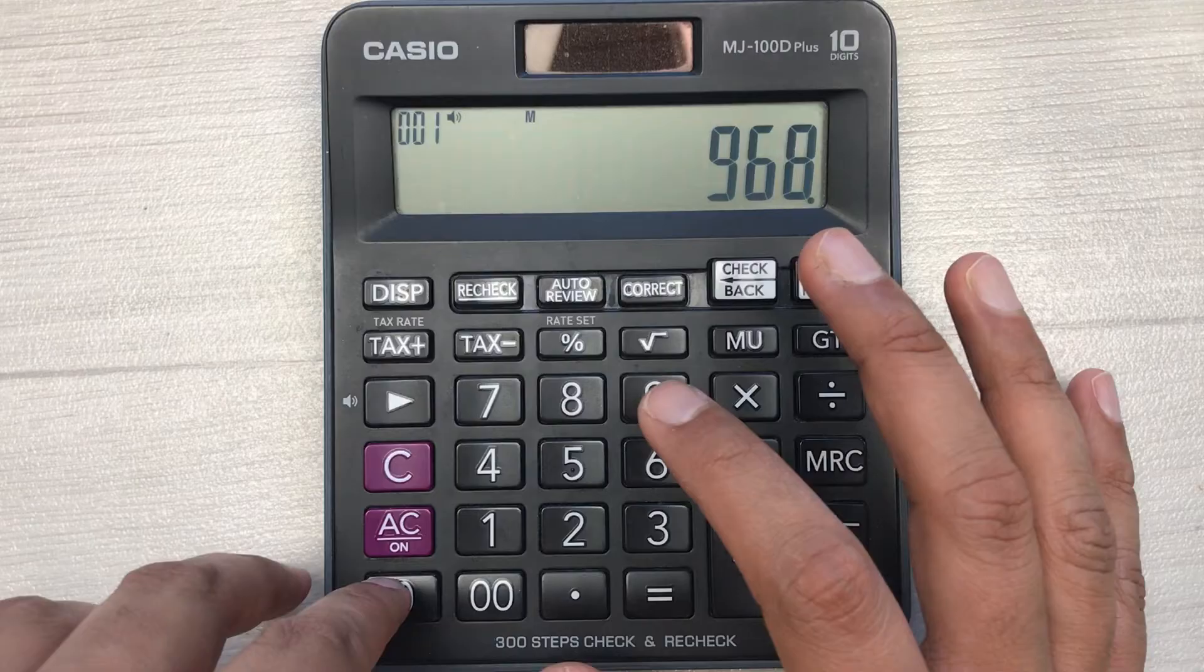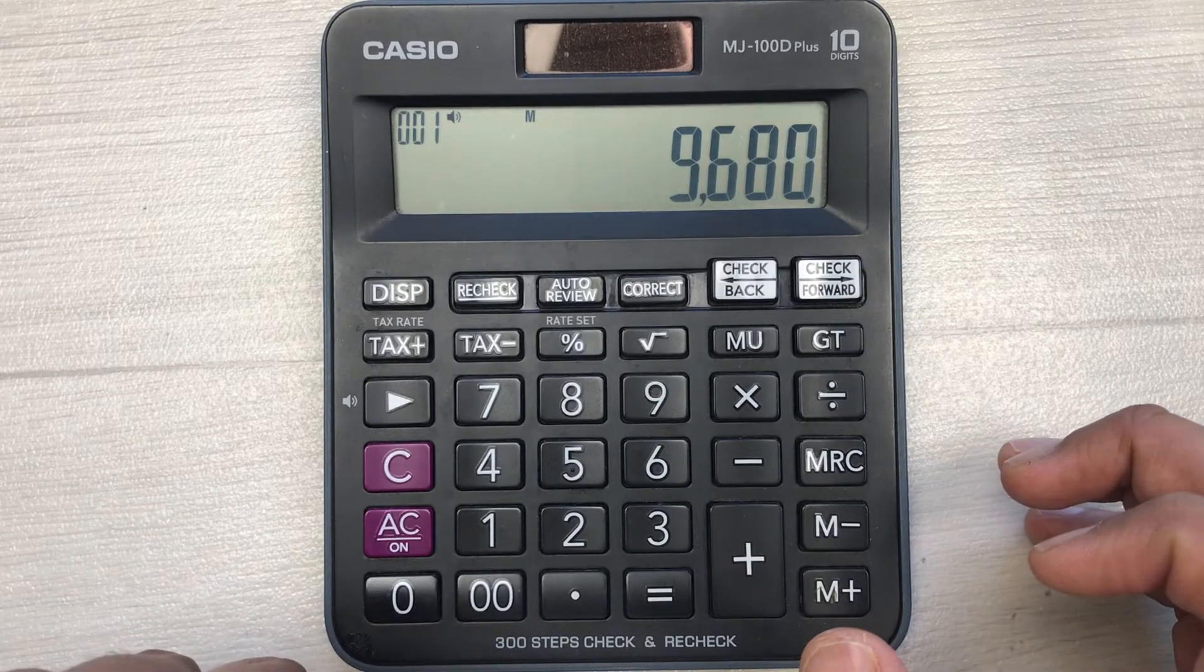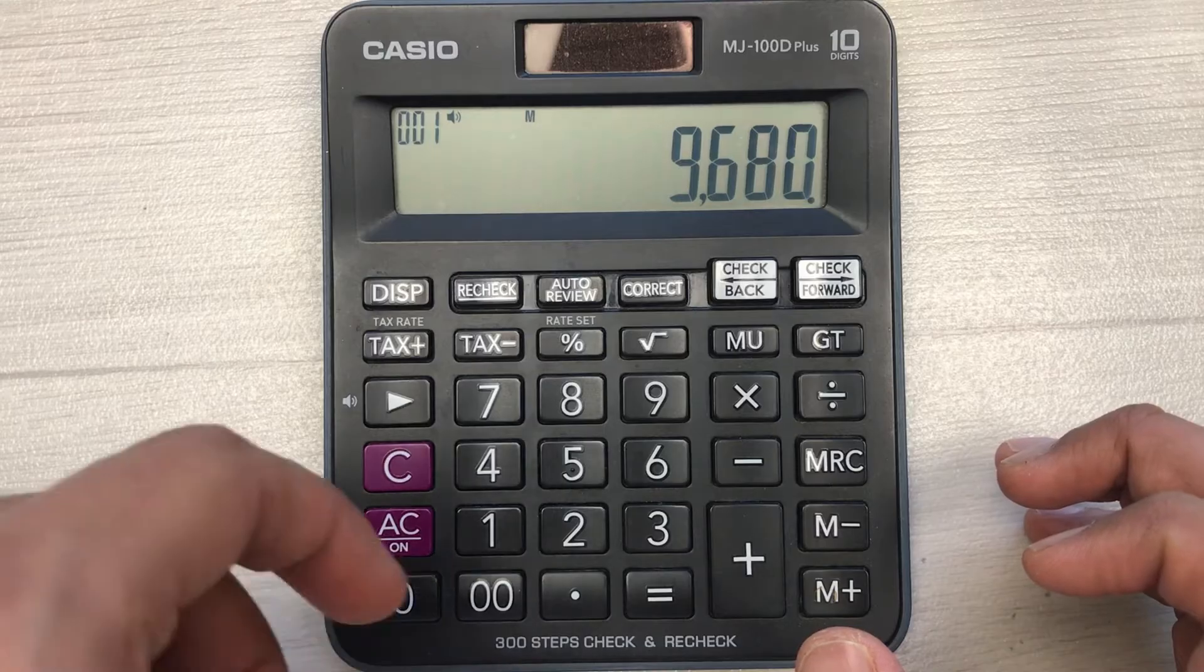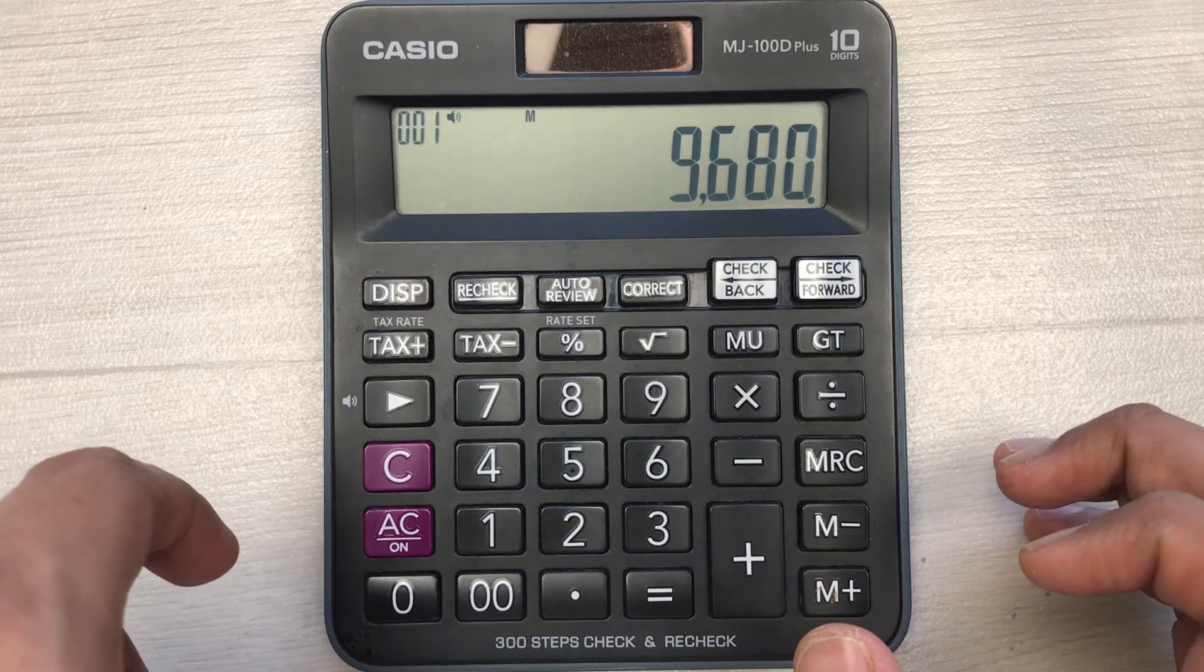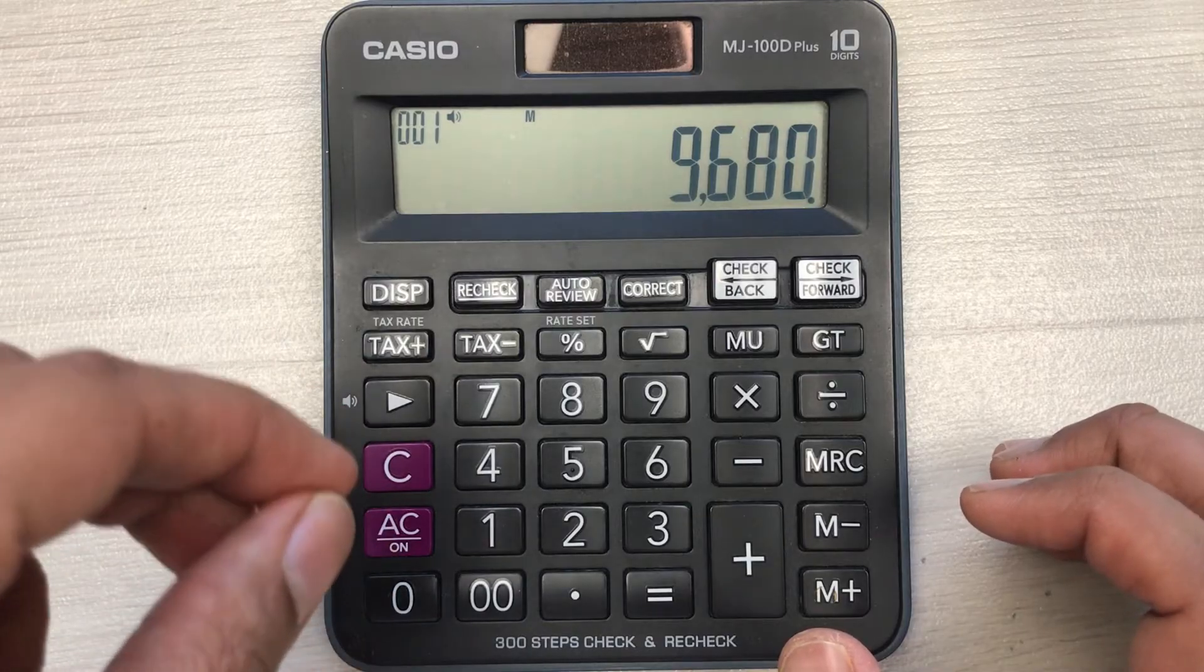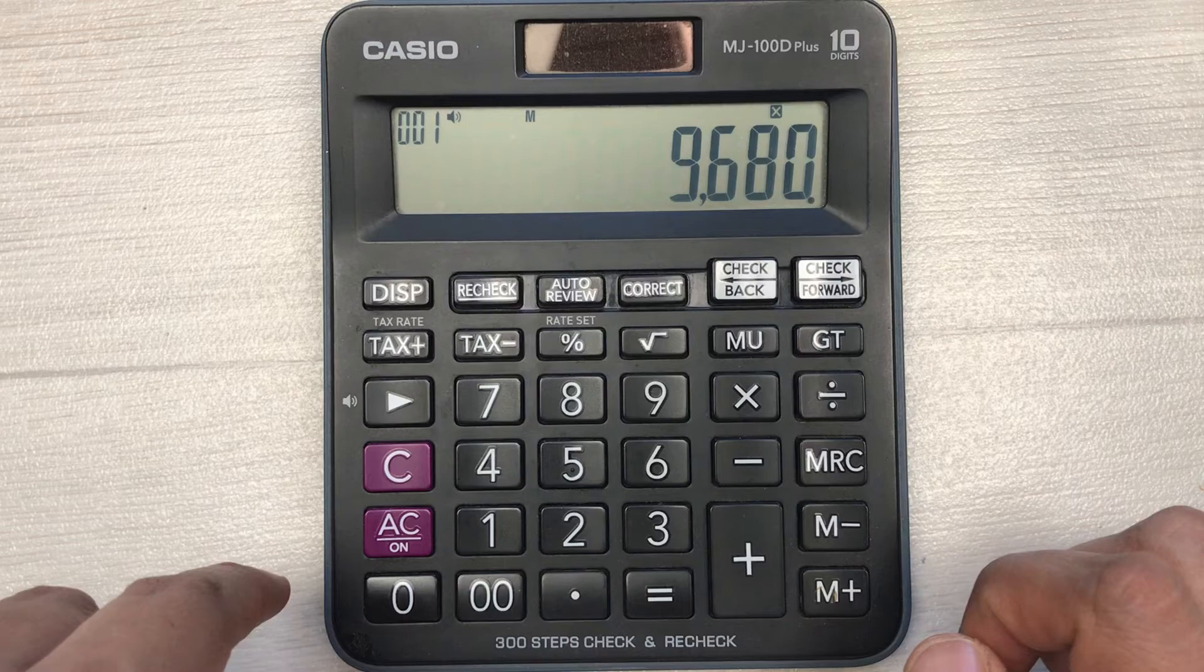And you want to find out what will be the final amount after 25% discount. So you have to do it in two simple steps. First of all, you have to press this multiply button.